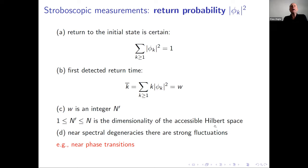Now we focus on the probability for the return. This sum is really one, which means we will always return to the initial state with certainty. The average return time is just the winding number, and by calculation, it turns out this is the dimensionality of the accessible Hilbert space. Near these degenerate points where n jumps, there are strong fluctuations of this time k, for instance near phase transitions.